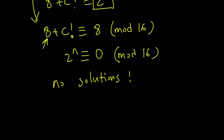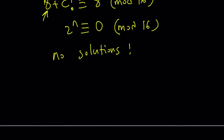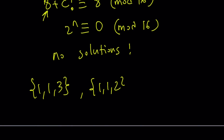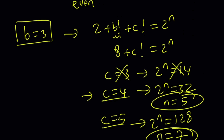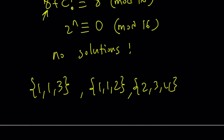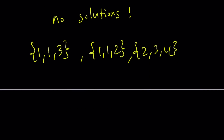To conclude, we write the solutions as sets since a, b, c are interchangeable. The four solution sets are: (1, 1, 2), (1, 1, 3), (2, 3, 4), and (2, 3, 5) — a total of 4 solutions.